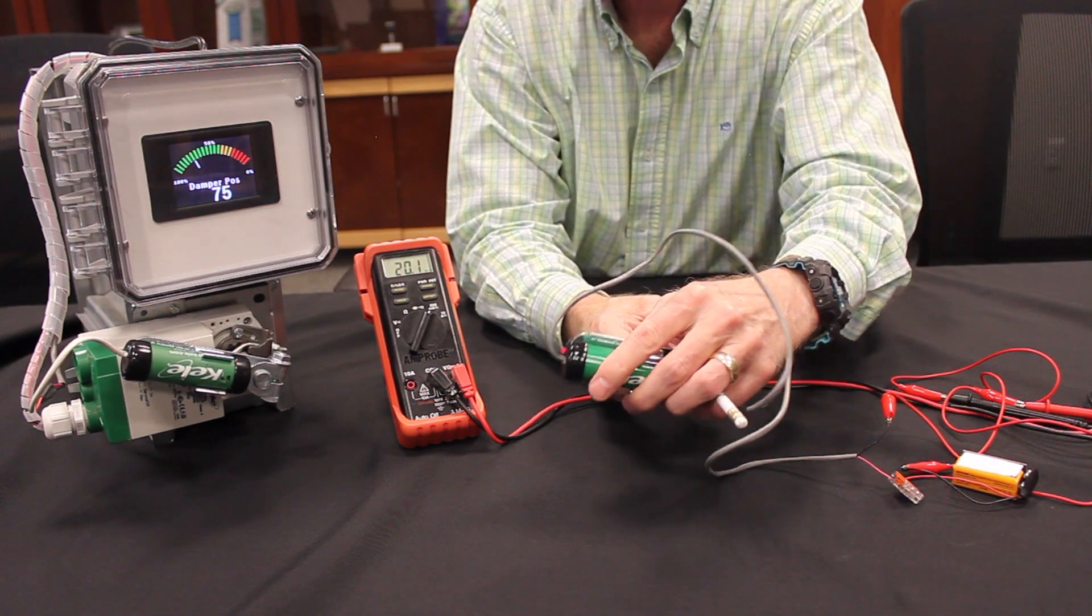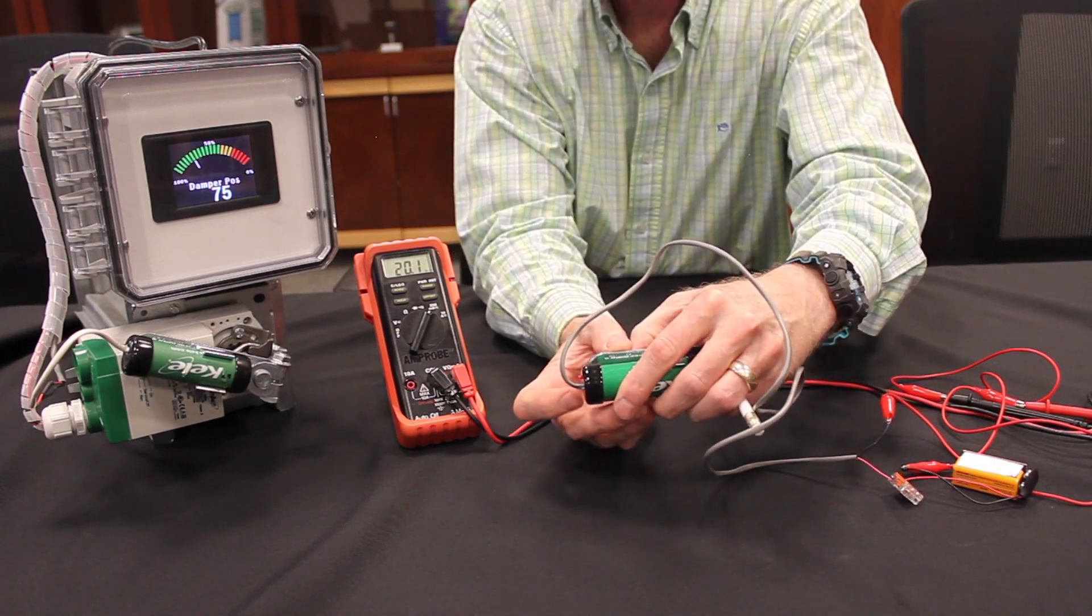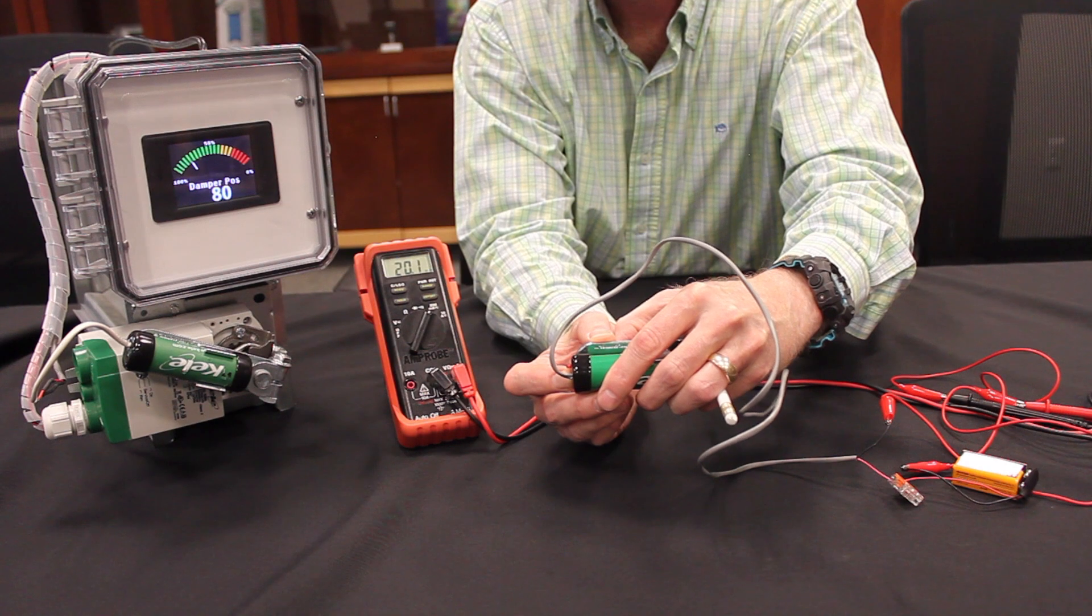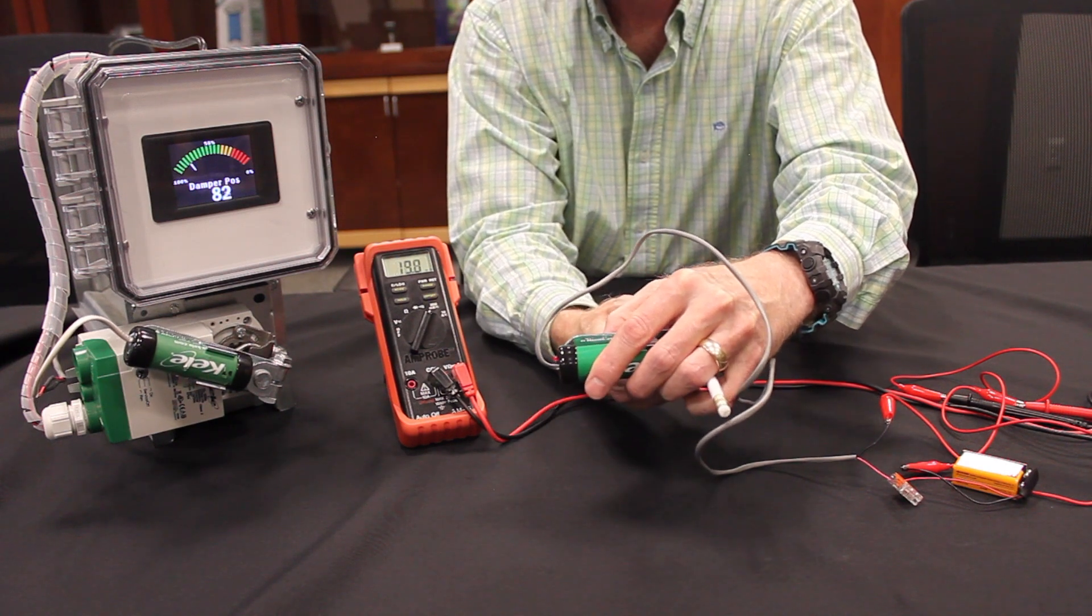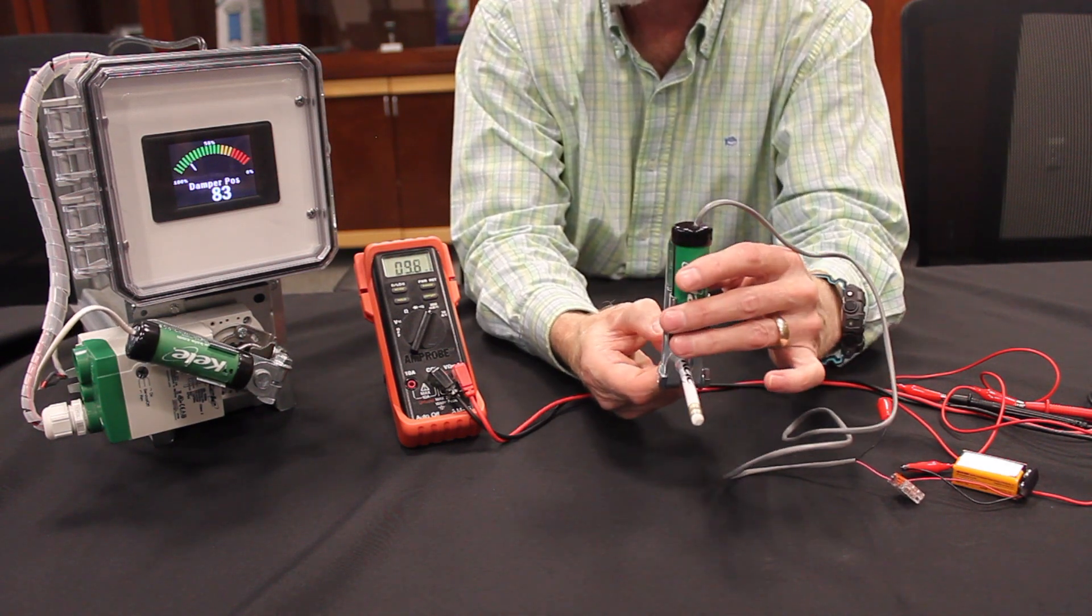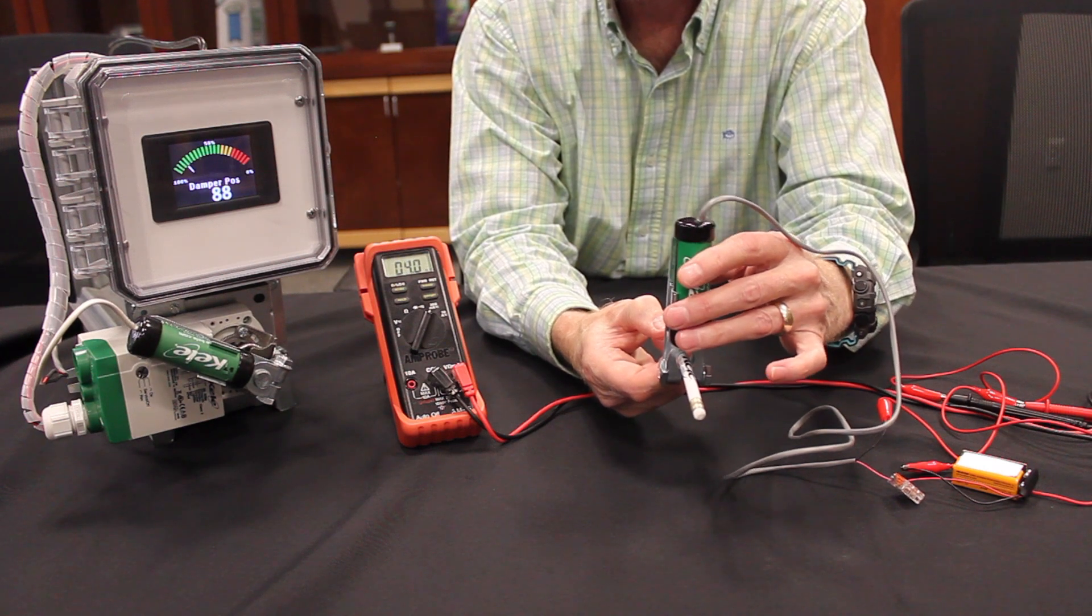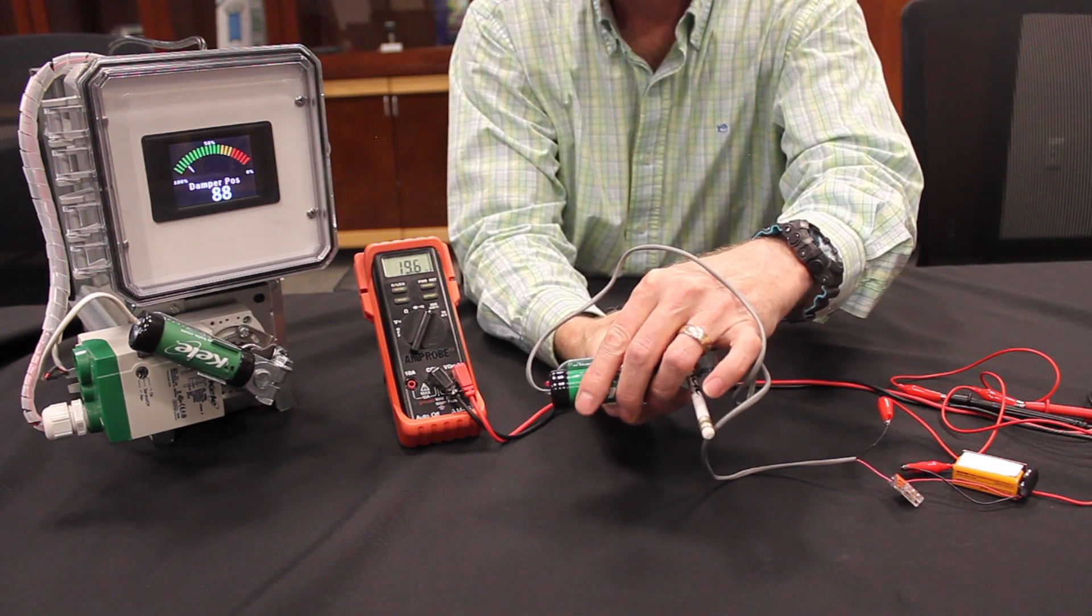Now I want to rotate it to the 20 milliamp position like so. Once there, I'll push the button again and it's calibrated. You can see it reads 4 milliamps when vertical and 20 milliamps when horizontal.